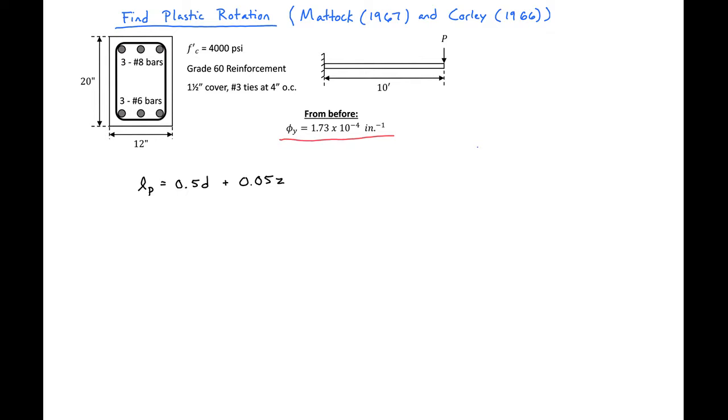Our Z value is the distance from our point of maximum moment to our zero moment point. In our case we have maximum moment at the end equal to PL. We have zero moment at the other end of the beam, so we have Z equal to 10 feet.